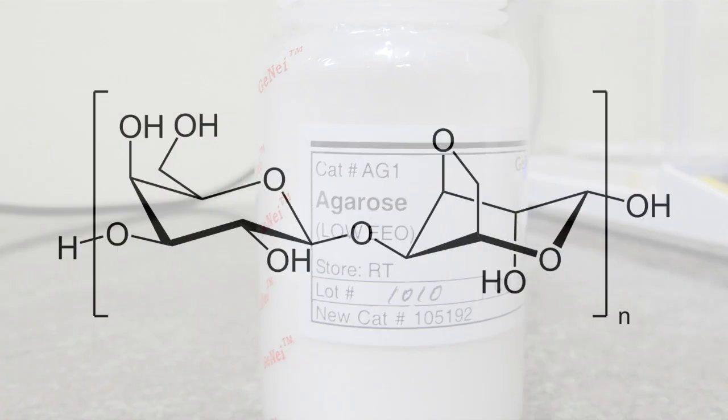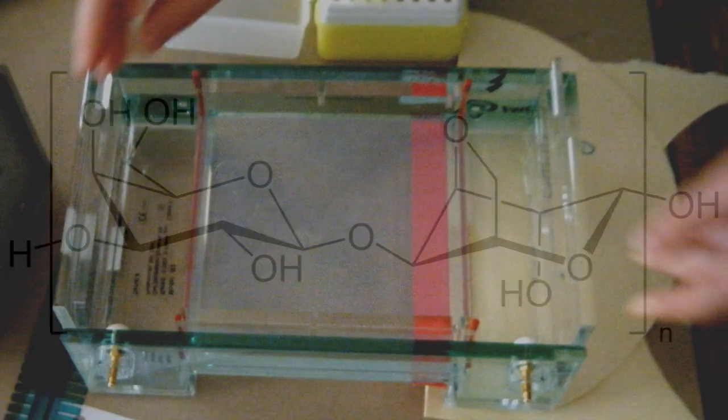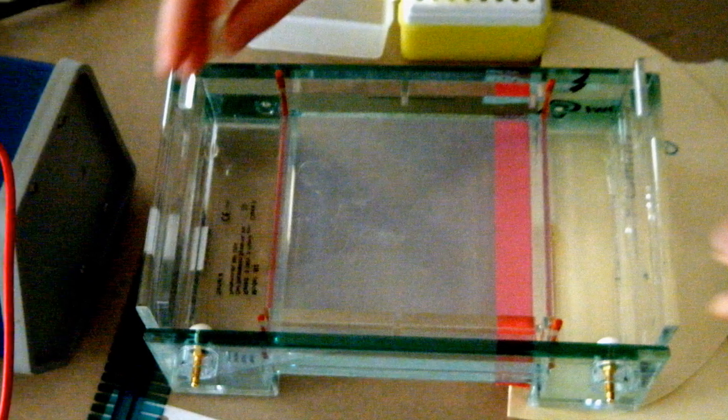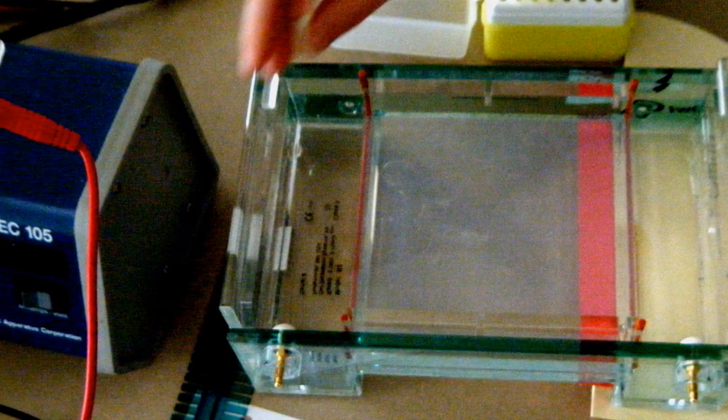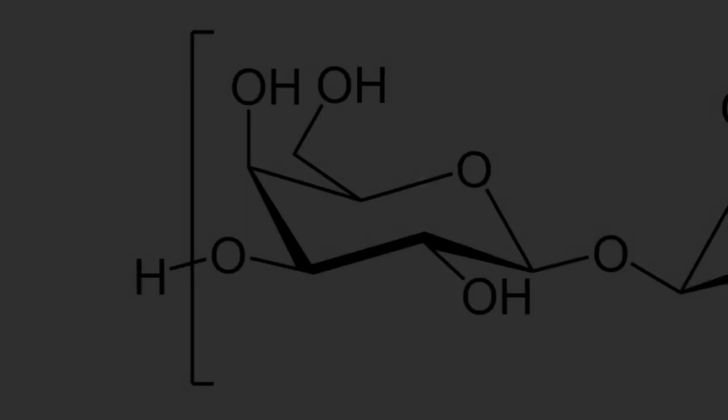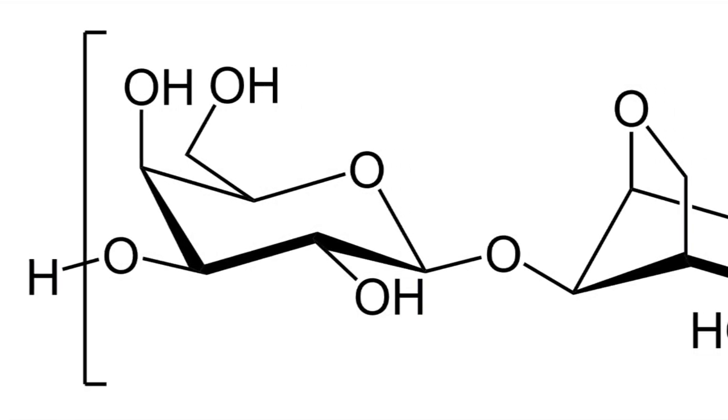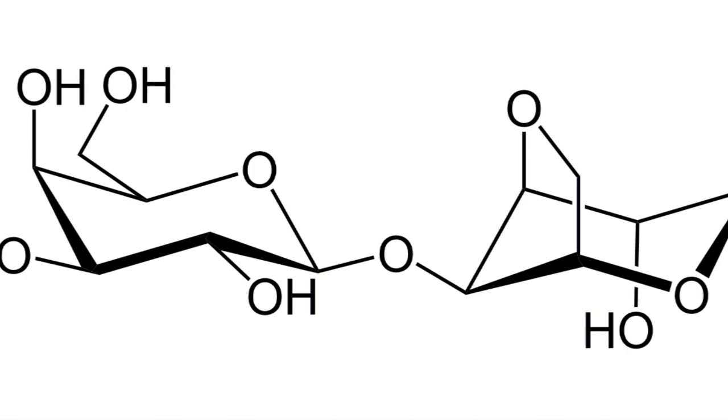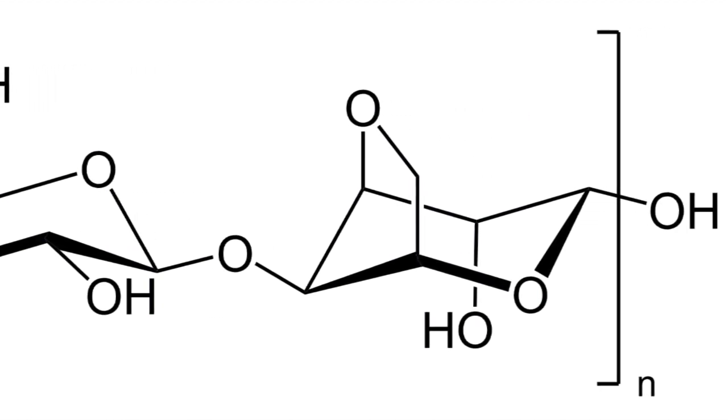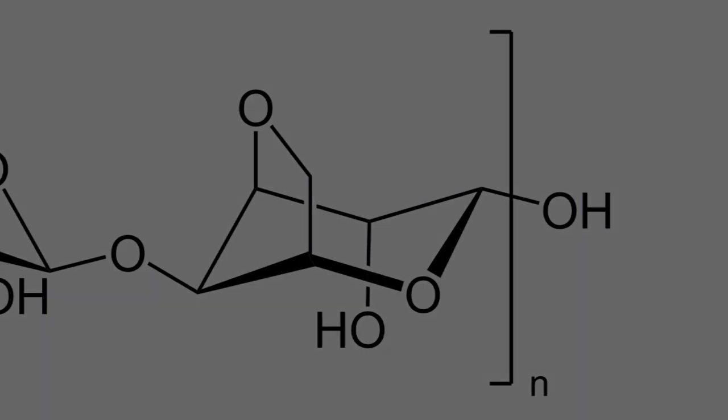Agarose is a polysaccharide from red algae obtained from agar that is used for a variety of life science applications, especially in gel electrophoresis. Agarose forms an inert matrix utilized in separation techniques. Many structures easily attach to agarose, including various types of proteins.